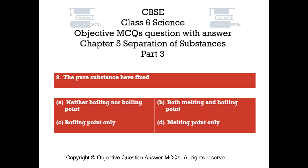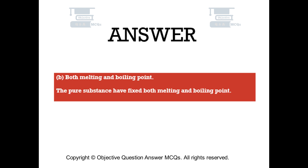Question number 9. The pure substance have fixed. Option A: Neither boiling nor melting point. Option B: Both melting and boiling point. Option C: Boiling point only. Option D: Melting point only. The right answer is Option B — Both melting and boiling point. The pure substance have fixed both melting and boiling point.